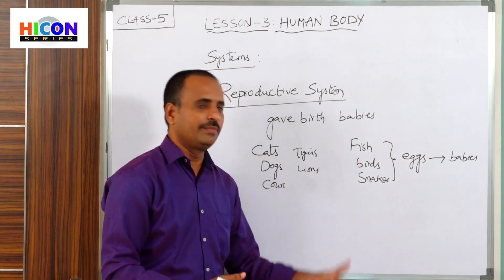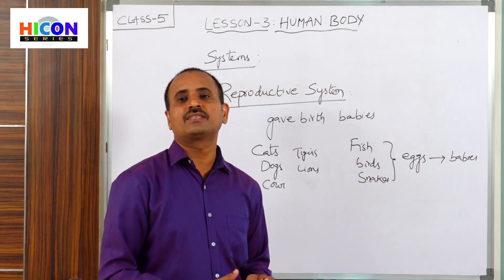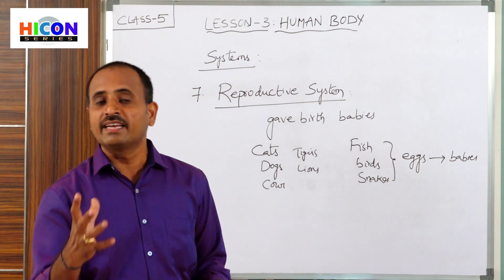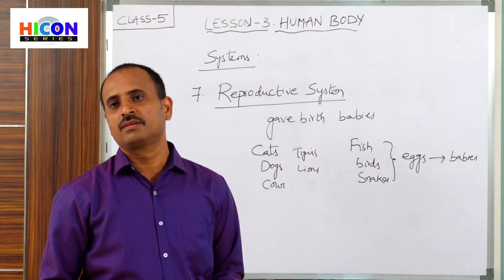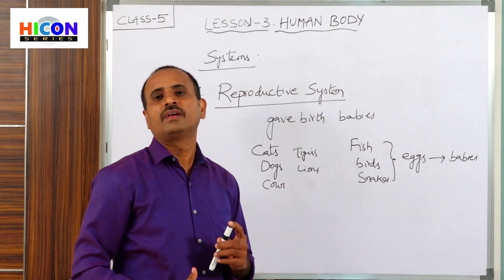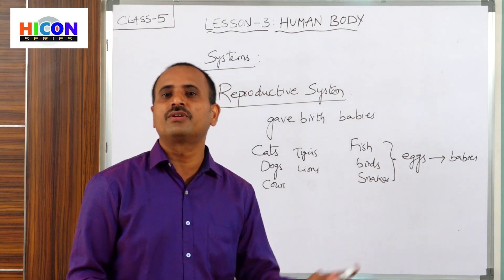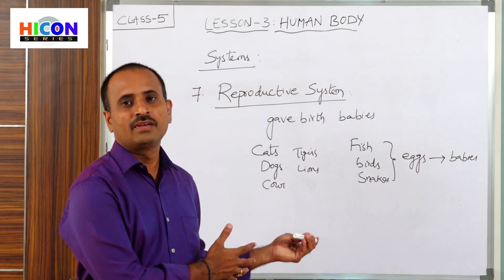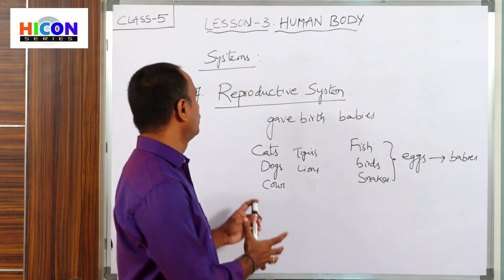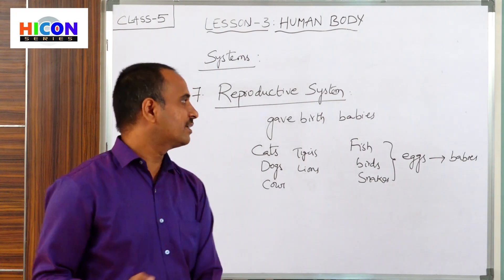For example, hens lay eggs and hatch them, and after some days the eggs produce smaller babies. Because of reproduction, every species and every race of animals has continued to live on the earth from ancient times. If there is no reproduction, then they would not continue to live on the earth and they would become extinct.